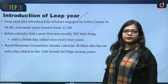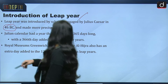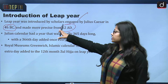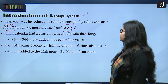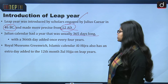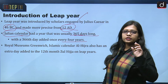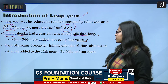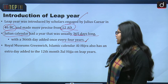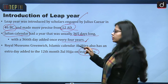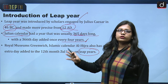The leap year was introduced by scholars engaged by Julius Caesar in 46 BC and made more precise from 12 AD. The Julian calendar had a year that was usually 365 days long, with a 366-day year added once every 4 years. The Islamic calendar Al-Hijra also has an extra day added to the 12th month, Zul-Hijja, on leap years.